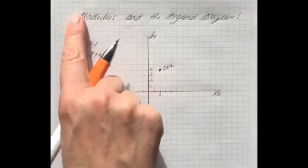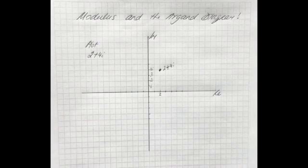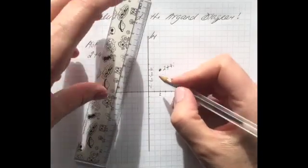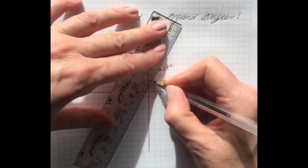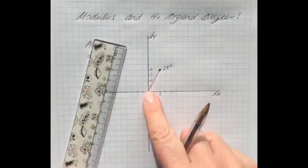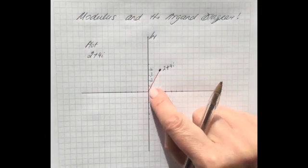Now when we come to dealing with the modulus, the modulus is always asking you to find the length of that complex number and they always measure the length going from the origin or (0,0) right here in the middle. So the modulus is looking for this length.